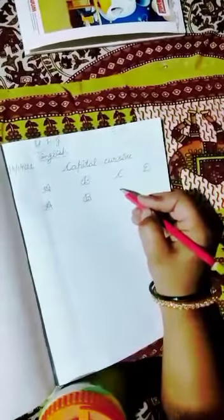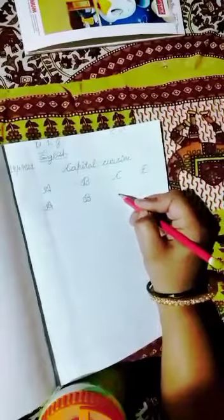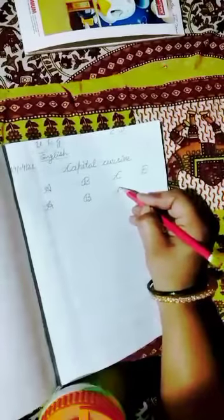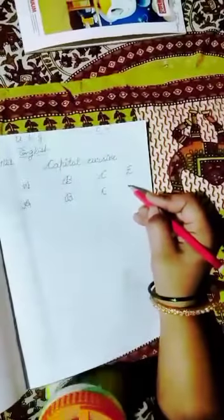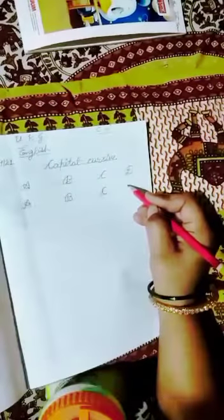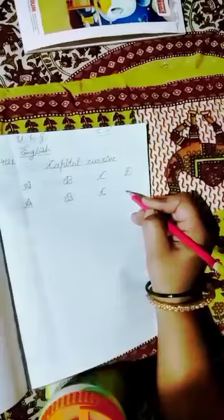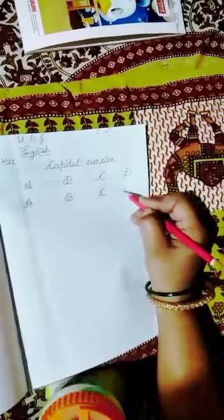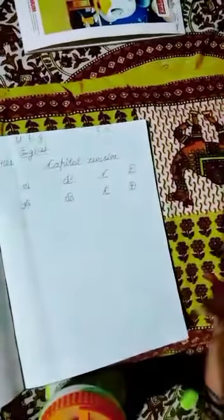And here we will make capital C. 1, 2, 3. And children, here we will make D in 3 lines: 1, 2, 3. Like this children we will make them.